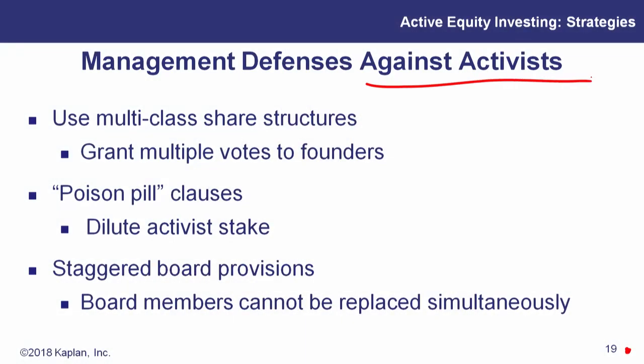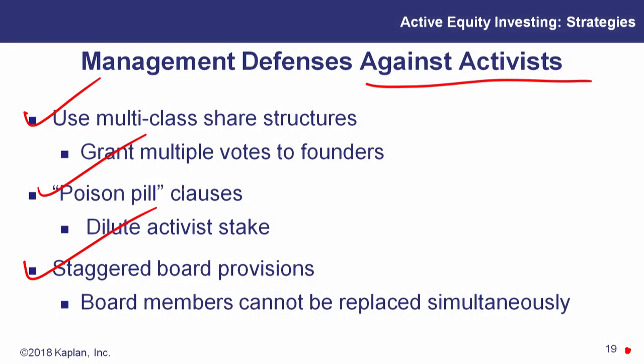So management fights back. Just like in Star Wars, the empire strikes back too. So what can they do against activists? We can give multiple votes to founders. We can eliminate the float that's out there. You can't buy a lot of our shares because they're simply not available. We can set up poison pills. Hey, if you buy our company, it's going to cost you a lot of money. It's going to dilute your stake. And we can play around with the board so there's no way you can replace all of us simultaneously, which is going to make it really harder. If you're good at this, this is a great way as an attorney to make and support your family. You can help companies come up with defenses to fight back against these activist investors. This is an active debate that's going on right now.